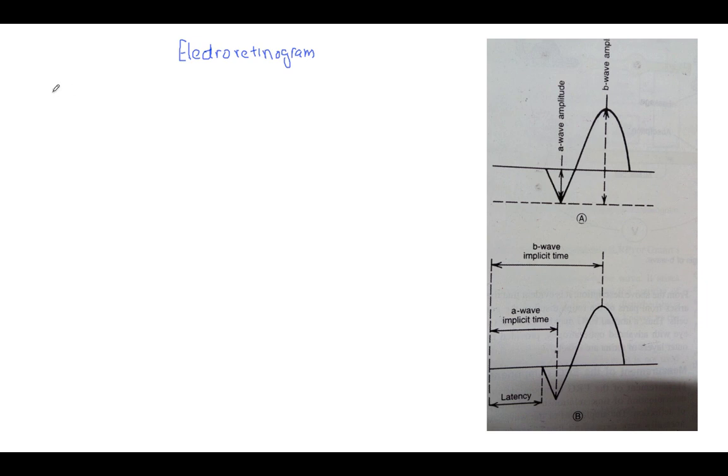Electroretinogram is a wave pattern that results from electrical activity of neural and non-neural cells of the retina. Basically, ERG tells us about the status of the retina.